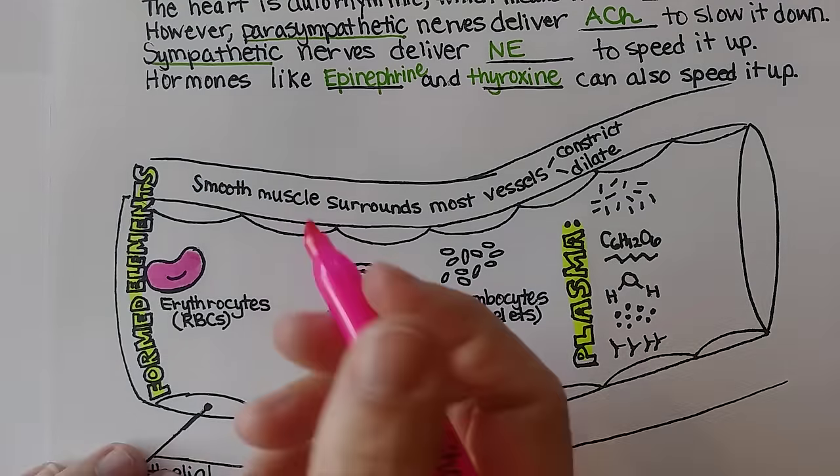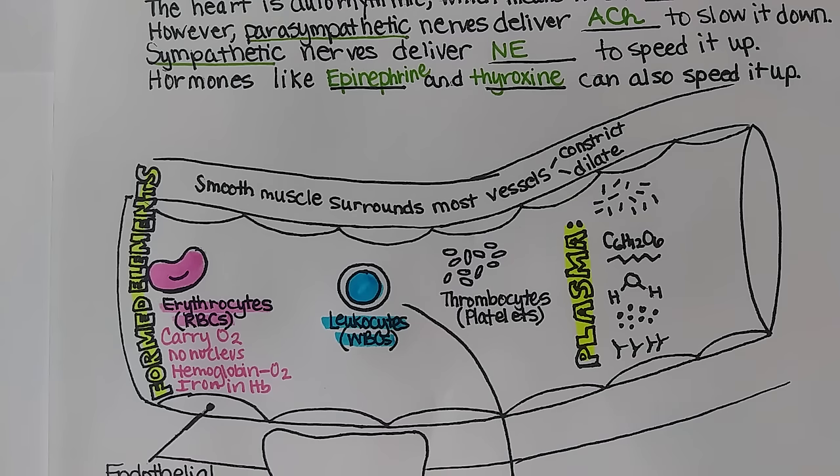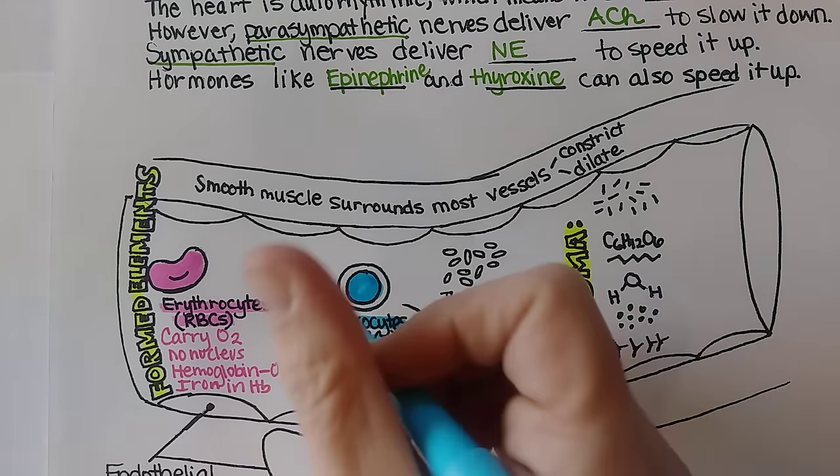Each hemoglobin contains iron that binds to oxygen. Leukocytes are white blood cells; most of them — perhaps 97-98% — reside in tissues rather than circulating in the blood. Their sole job is fighting infection and defending against invaders. They are able to leave the bloodstream and enter tissues when they detect the chemical signature of a wound or infection.